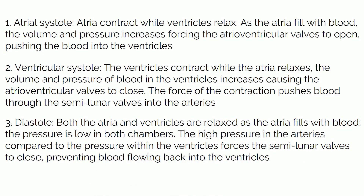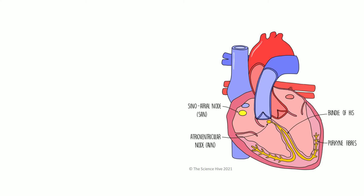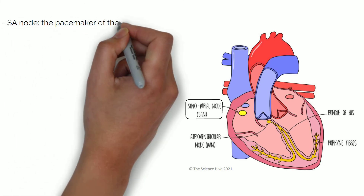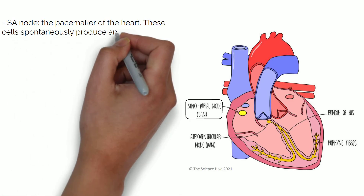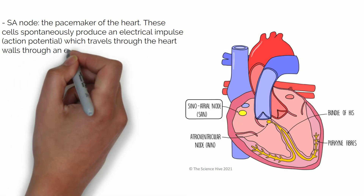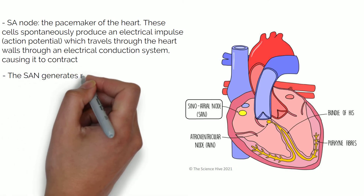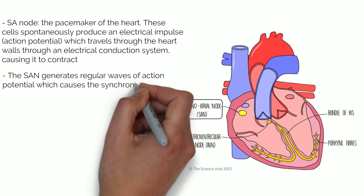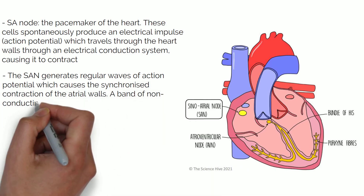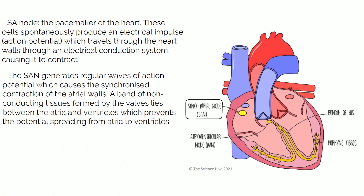The heart is a myogenic muscle, meaning it can contract of its own accord and maintain rhythm without requiring an external stimulus. The sinoatrial node, or SAN, is a group of cells in the wall of the right atrium and is the pacemaker of the heart. These cells spontaneously produce an electrical impulse, or action potential, which travels through the heart walls through an electrical conduction system causing it to contract. The SAN generates regular waves of action potential causing synchronised contraction of the atrial walls. A band of non-conducting tissue formed by the valves lies between the atria and ventricles, which prevents the potential spreading from the atria to the ventricles.